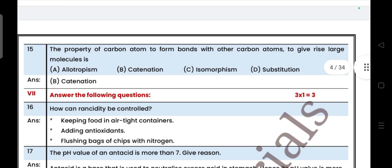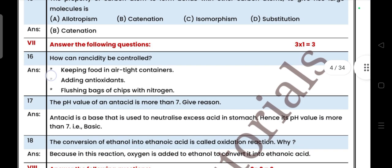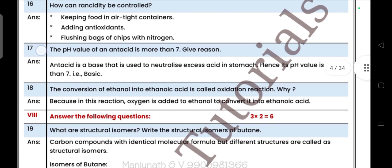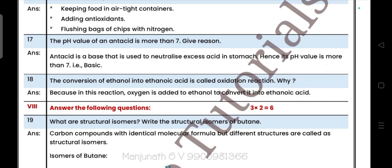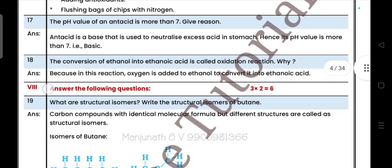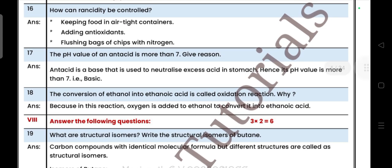Next question number 15: the property of carbon atom to form bonds with other carbon atoms to give rise to large molecules is called catenation. How can rancidity be controlled? Keeping food in airtight containers, adding antioxidants, then flushing bag of chips with nitrogen. The pH value of antacid is more than seven, give reason. Antacid is a base that is used to neutralize the excess acid in stomach, hence its pH value is more than seven, that is basic. The conversion of ethanol into ethanoic acid is called oxidation reaction. Why? Because in this reaction oxygen is added to ethanol to convert it into ethanoic acid.